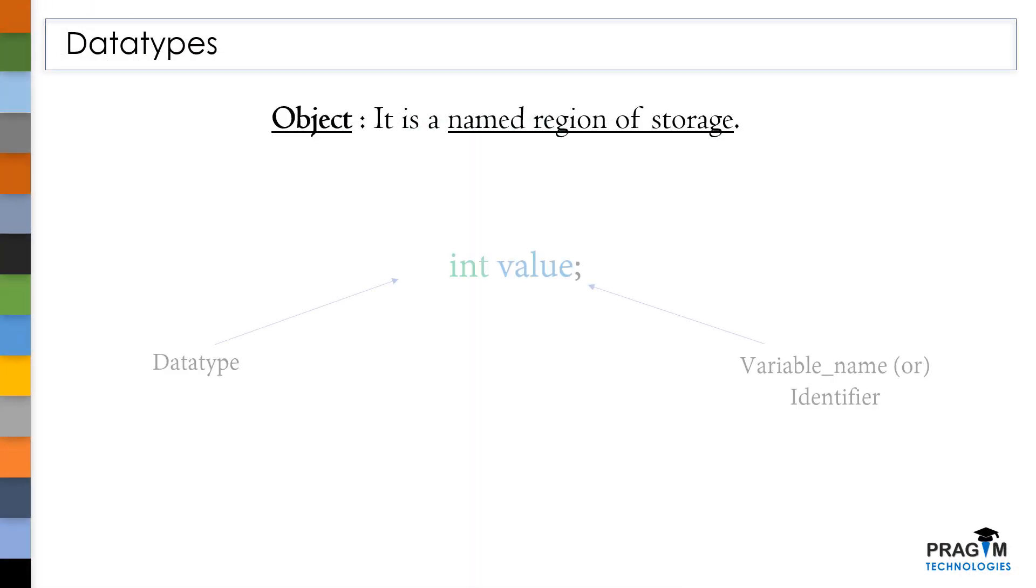For example, here I have declared a variable called value and its data type is int. In our previous sessions, we have discussed that if we declare a variable based on its data type, some amount of memory will be allocated for that variable. Here, the data type that we used is int. So, when we execute this program, 4 bytes of memory will be allocated for this variable. Let's assume this as 4 bytes of memory allocated for this variable. And this is the address range of these 4 bytes.